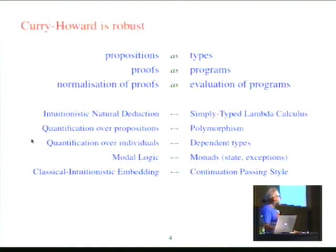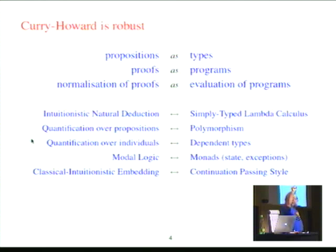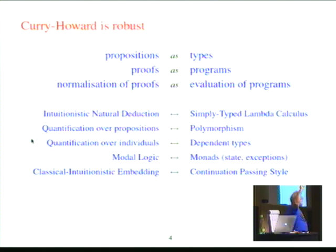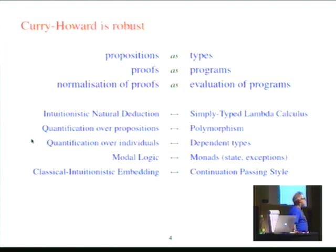It doesn't just work for one thing. It's not just that intuitionistic natural deduction corresponds to simply typed lambda calculus, but also quantification over propositions — second-order quantification — corresponds to polymorphism, which we use all the time. We've heard a lot about dependent types. How were dependent types discovered? Because in this paper by Howard, he pointed out that quantification over individuals corresponds to dependent types. And it works for many other things. Monads came along; modal logics came along much earlier. Eventually somebody worked out that one form of modal logics exactly corresponds to monads — so that gives us things like state and exception. And even Gödel's embedding of classical logic into intuitionistic logic corresponds exactly to continuation-passing style. So time and time again this crops up. It's not just one correspondence, but many. It's very robust. It works for everything.